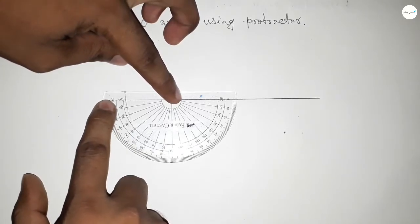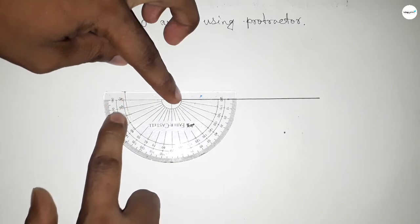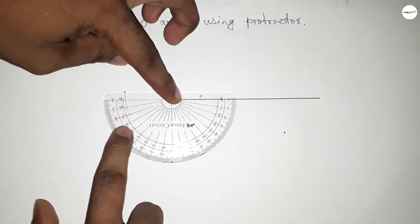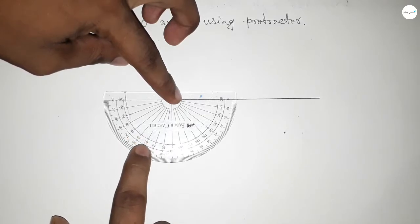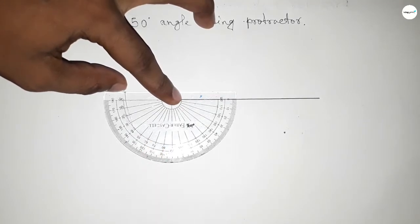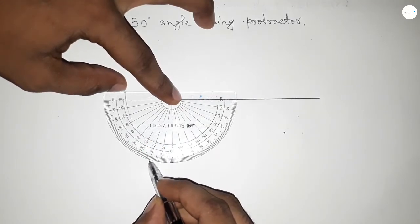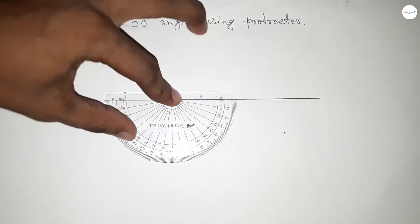Now counting the angle. This is 180 and this is 10, 20, 30, 40, 50, 60, and 70. So by adding 70 with 180, we can get 250 degree angle.